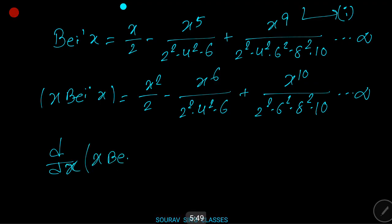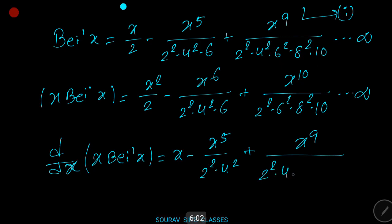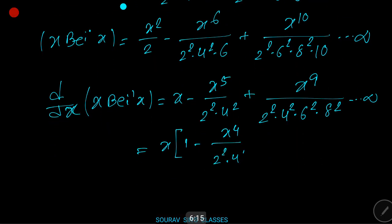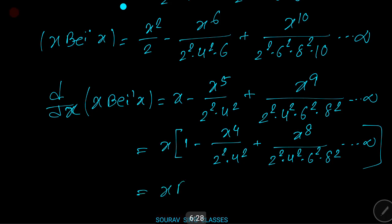Then x · bei'(x) = x²/2 - x⁶/(2² · 4² · 6) + x¹⁰/(2² · 6² · 8² · 10) - ... and d/dx[x · bei(x)] = x - x⁵/(2² · 4² · 6²) + x⁹/(2² · 4² · 6² · 8²) - ... which equals x · ber(x). Hence proved.